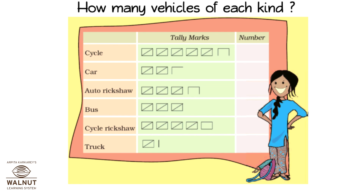How many vehicles of each kind? How many cycles? 28. How many cars? 12. How many auto rickshaws? 18. How many buses? 15. How many cycle rickshaws? 24. How many trucks? 6.